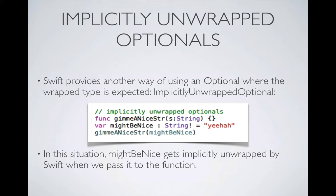Swift also provides implicitly unwrapped optionals. Declaring 'var mightBeNice: String!' tells the compiler: if this variable is referenced where the unwrapped type is expected, implicitly unwrap it automatically. So 'mightBeNice' gets unwrapped automatically and passed as a String to a function expecting a String.